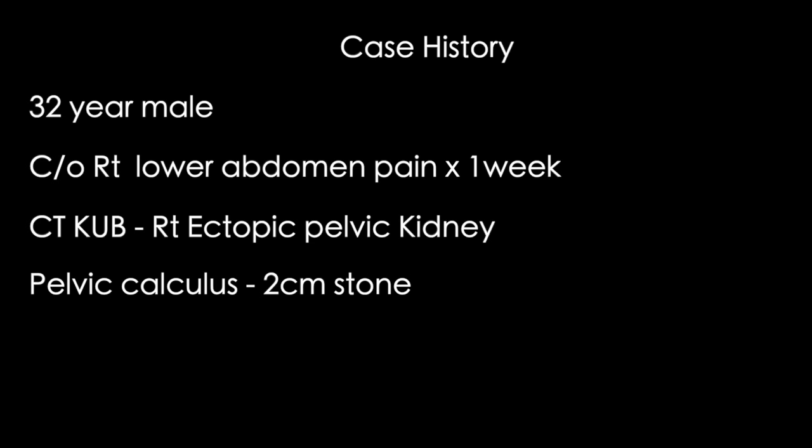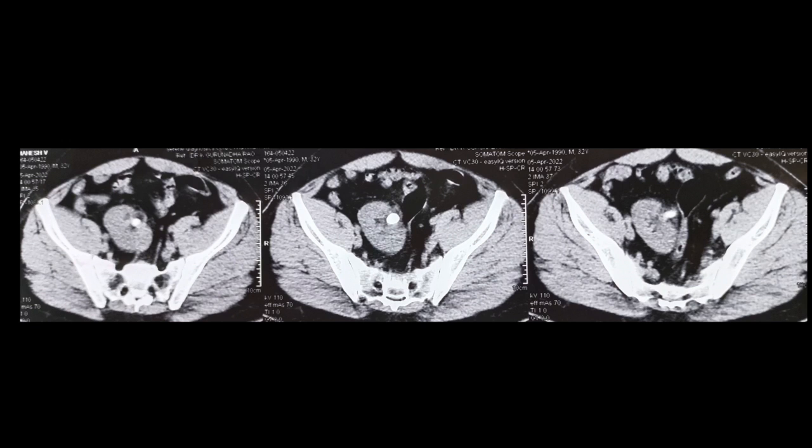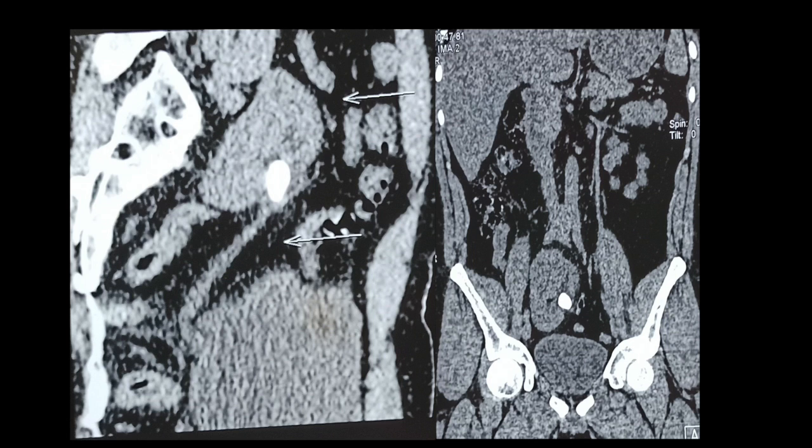Here we are showing a case of RIRS done for ectopic renal stone. There is no conflict of interest. The patient is a 32-year male with right-sided pelvic ectopic kidney with a 2 cm stone in the pelvis. This is the CTKUB showing the right-sided pelvic ectopic kidney with stone in the pelvis of around 2 cm size, volume of around 3500 mm³, and Hounsfield units of 850.